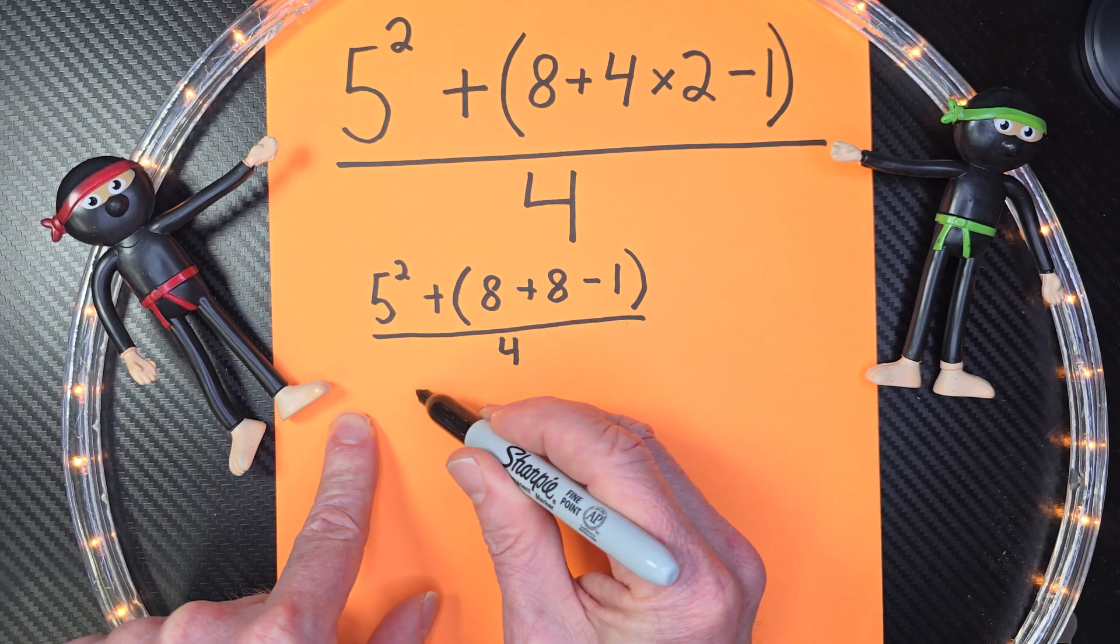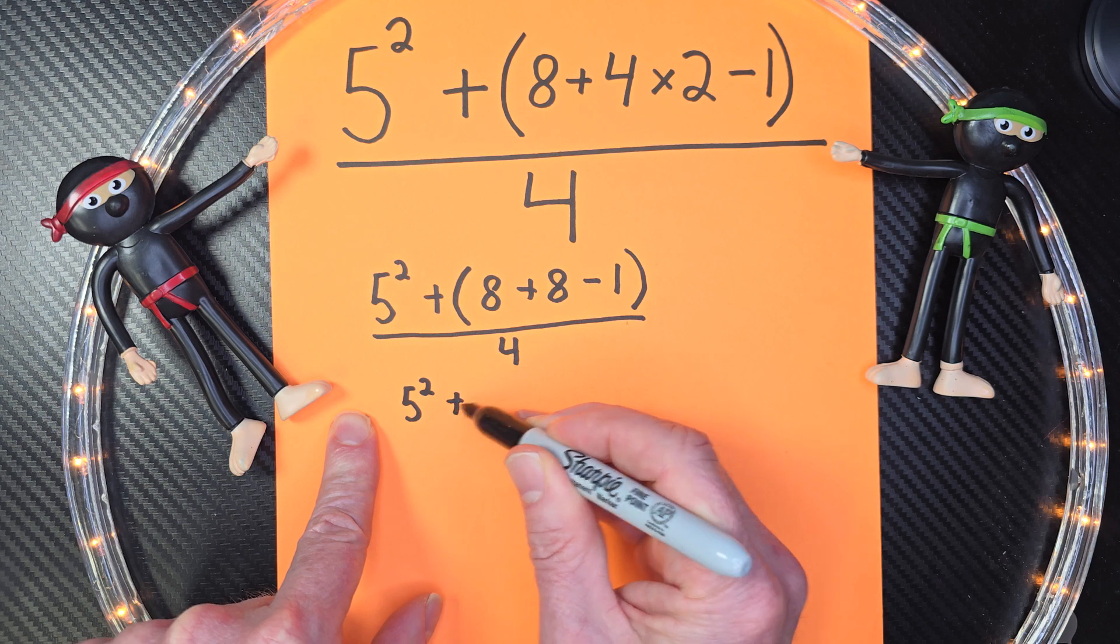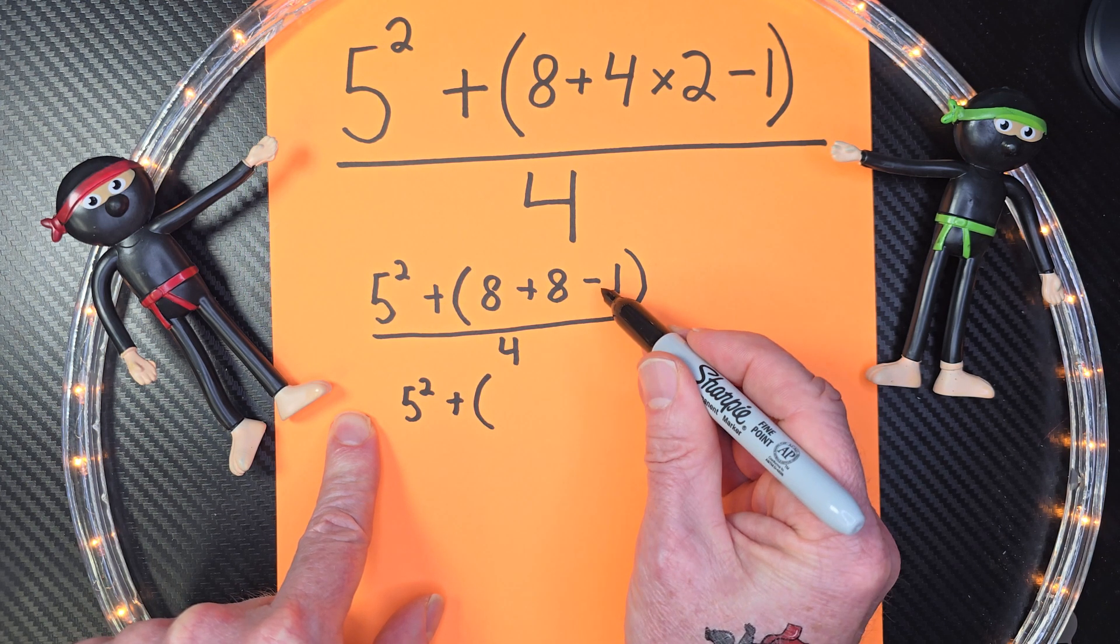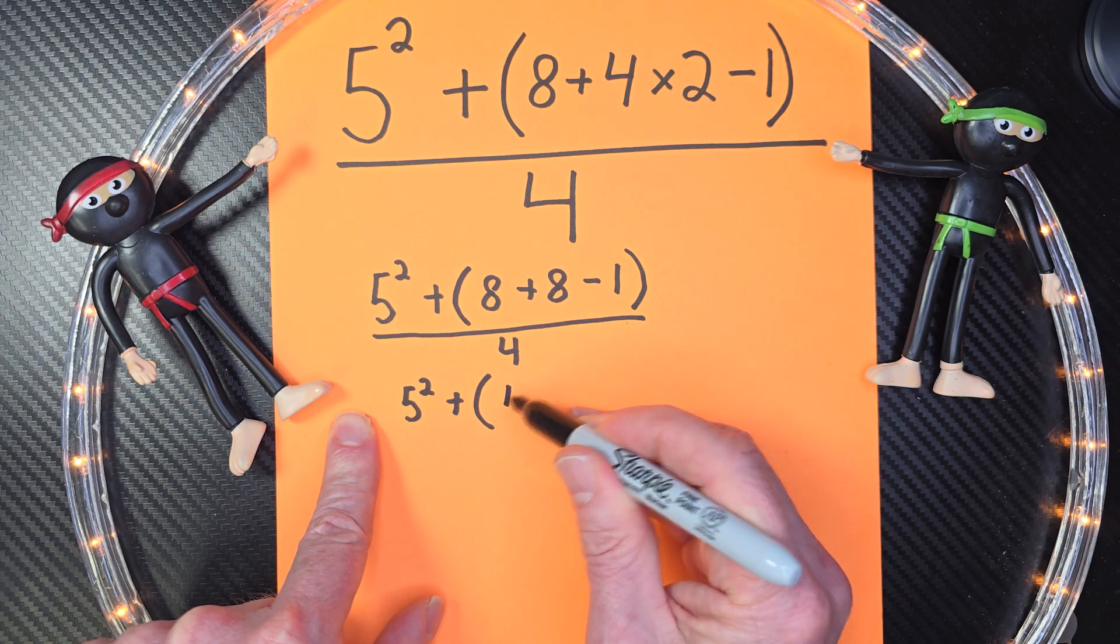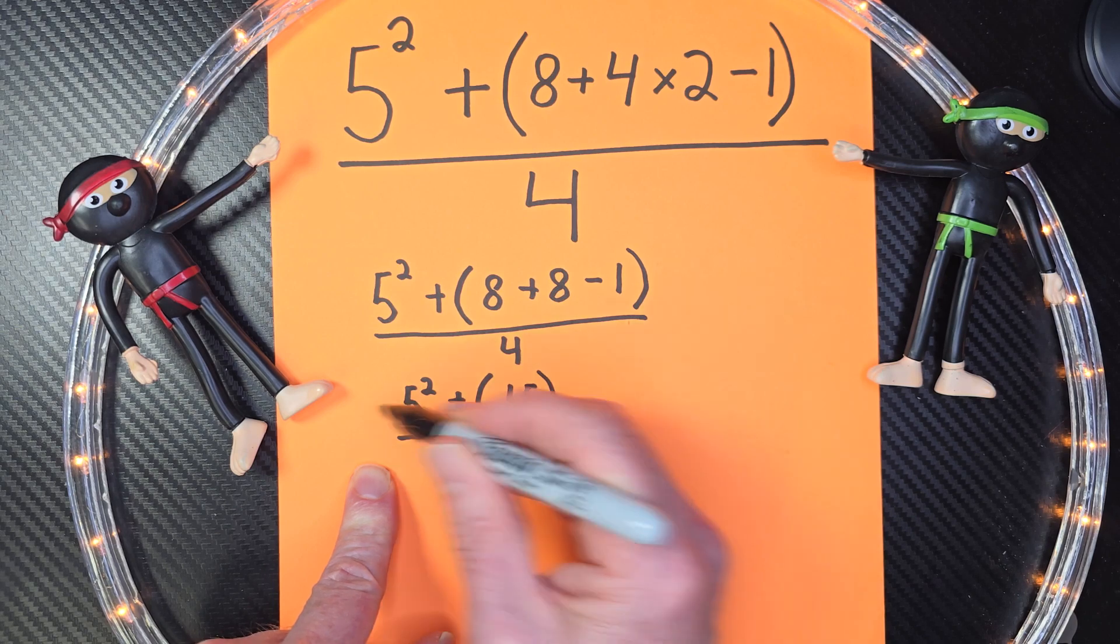Okay, now let's finish our parentheses here. So I'm going to go ahead and rewrite that again. 5 to the second power plus, 8 plus 8 is 16, minus 1 is 15. So I can put the 15 right there. All over 4.